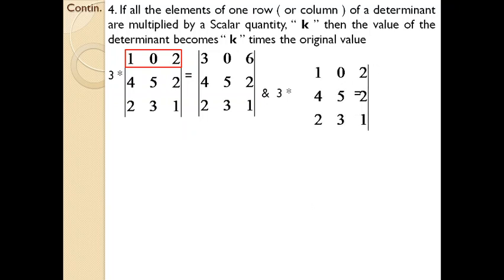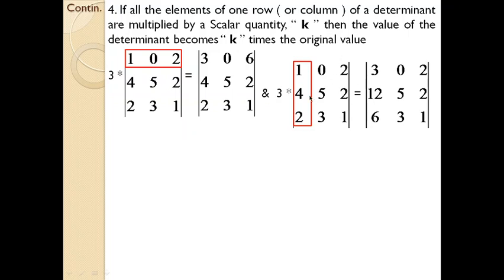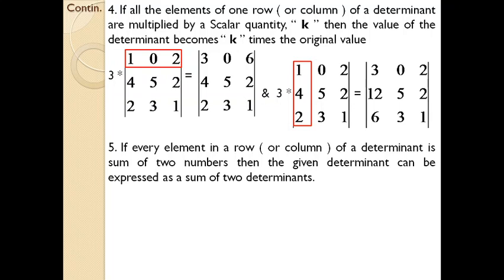Now we deal with the column case. If you are multiplying any column by a scalar — for example, the first column — you get 3×1=3, 3×4=12, 3×2=6. The determinant of this order-3 matrix will give a value that is 3 times the determinant value of the original. That is the property under this scenario.